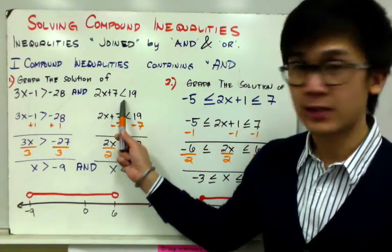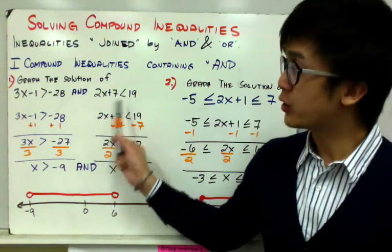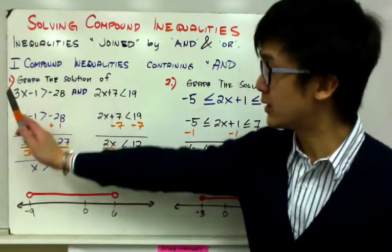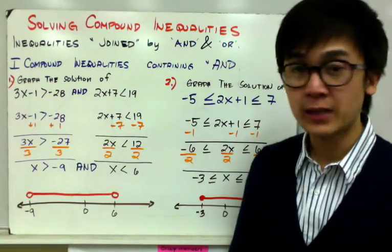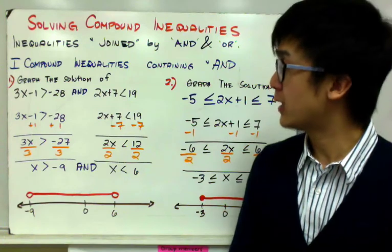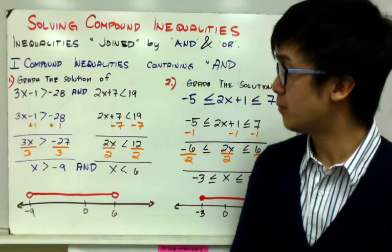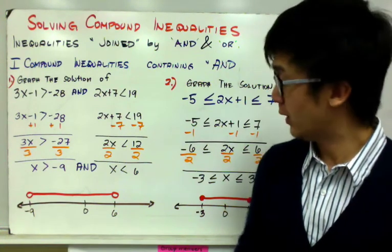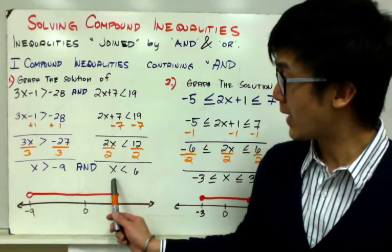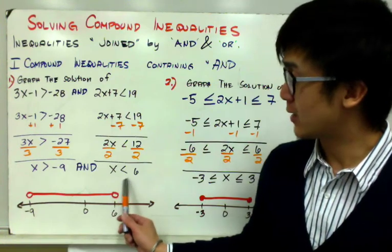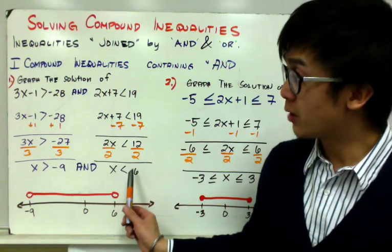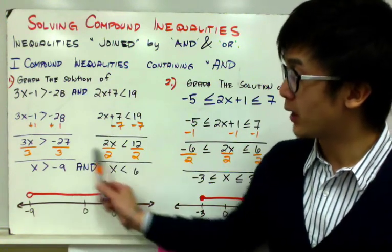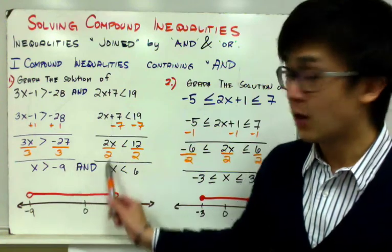On the second set, we have 2x plus 7 less than 19. Just like what we did on the first set, we need to have x by itself, so we subtract 7 on both sides and divide both sides by 2, leaving us with x less than 6.